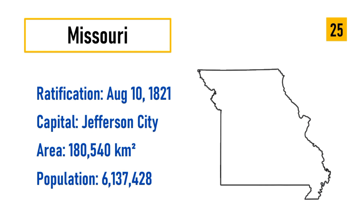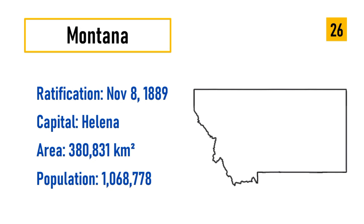Number 25: Missouri, ratification August 10, 1821, capital Jefferson City, area 180,540 square kilometers, population 6,137,428. Number 26: Montana, ratification November 8, 1889, capital Helena, area 380,831 square kilometers, population 1,068,778.